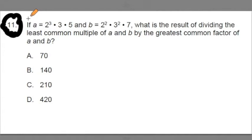It says, if A is equal to 2 to the 3rd times 3 times 5 and B is equal to 2 to the 2nd times 3 to the 2nd times 7, what is the result of dividing the least common multiple of A and B by the greatest common factor of A and B? Read that to yourself. Read it and think about it for a moment.